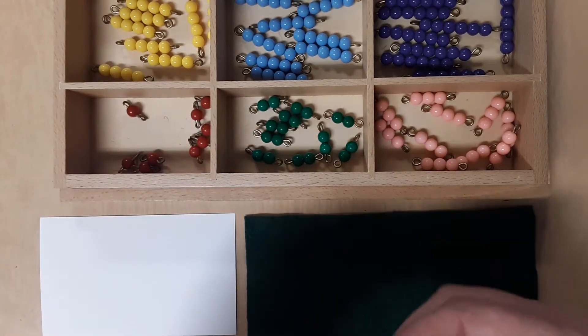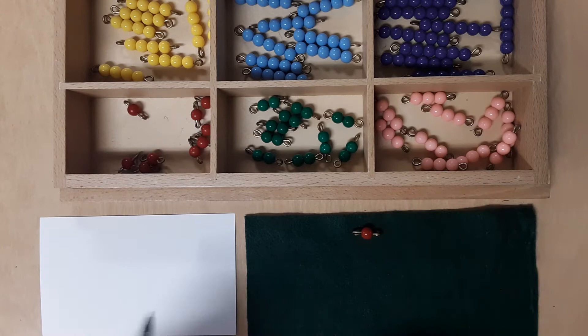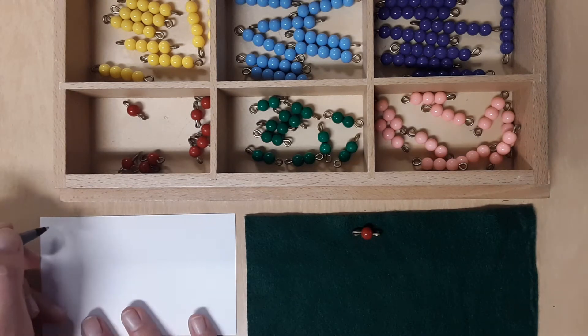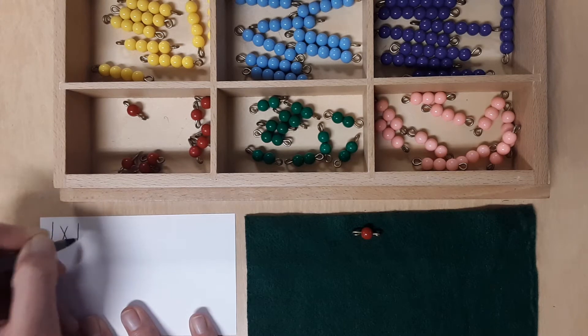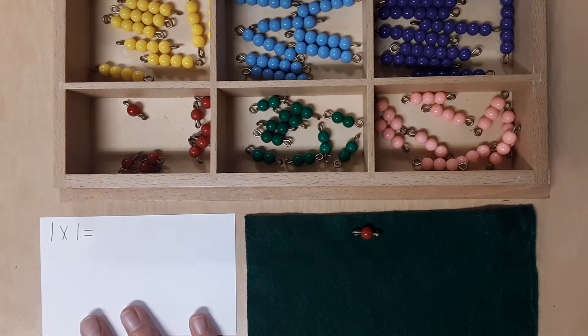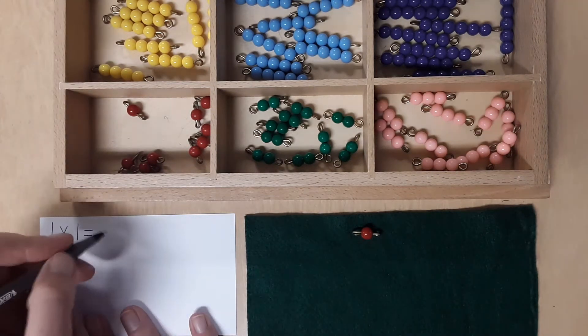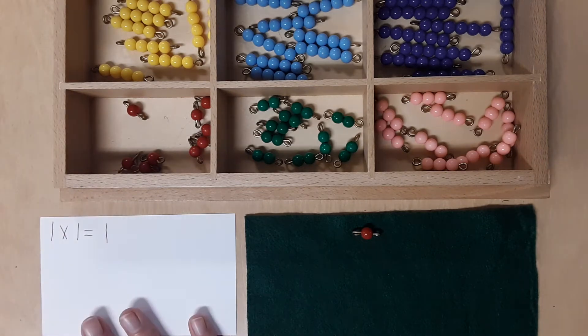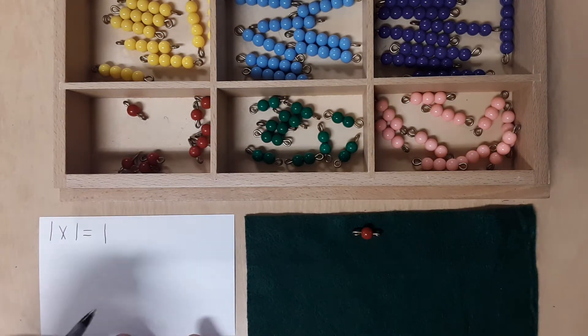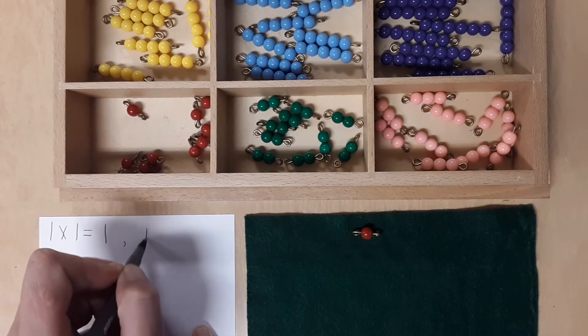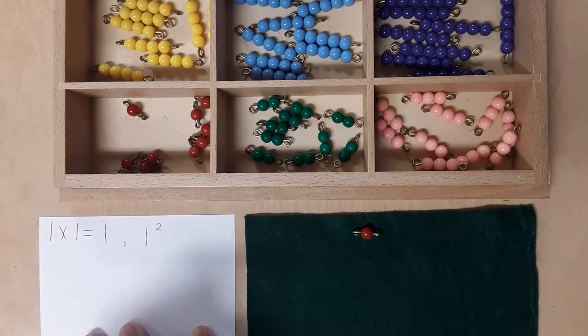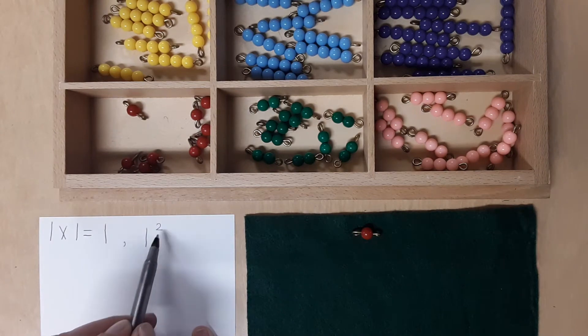So let's start with the 1. And if we multiply that by itself, it will be 1 times 1 equals, and there's only one bead here, so the answer is 1. When we multiply a number by itself, we can also write it like this: 1 squared. So a large one with a little 2.